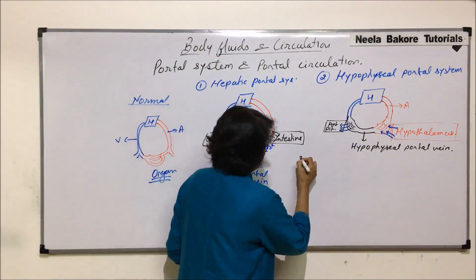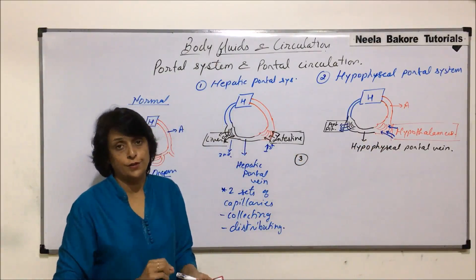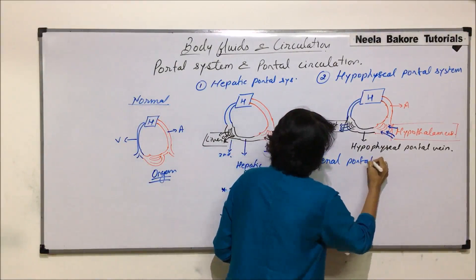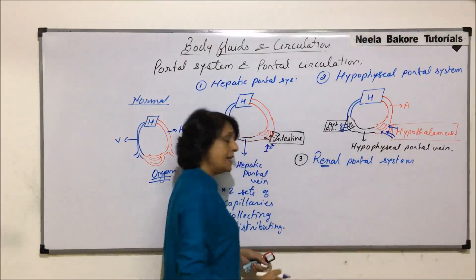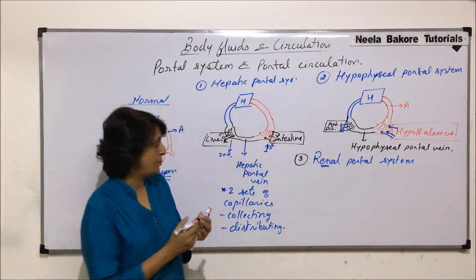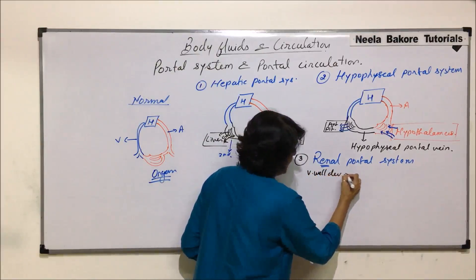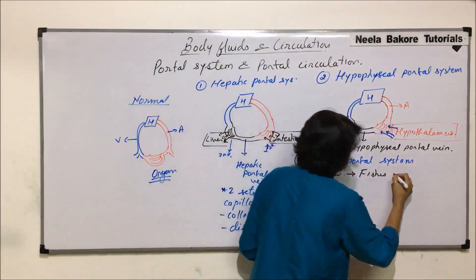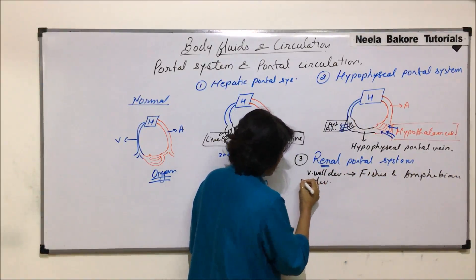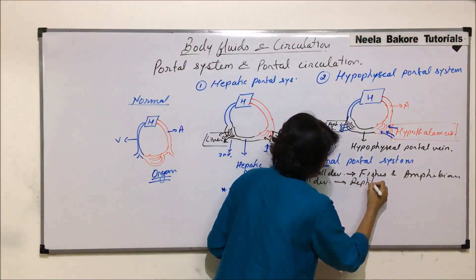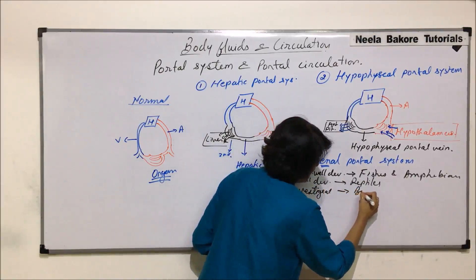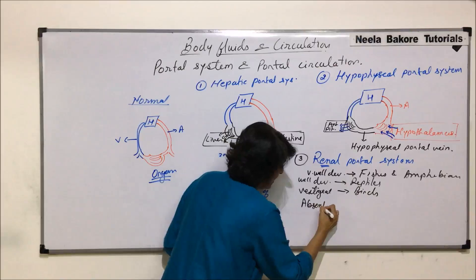There is a third portal system known as the renal portal system. Renal portal system is absent in mammals. As the word 'renal' is there, it is associated with the kidney. It is very well developed in fishes and amphibians, well developed in reptiles, vestigial in birds, and absent in mammals.